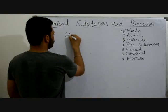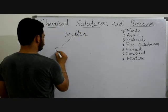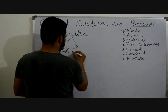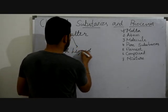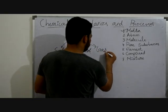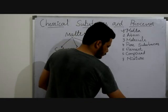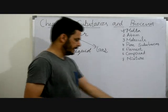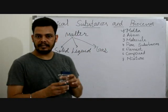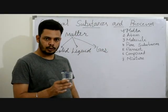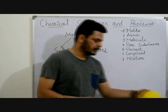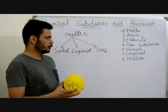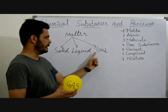Matter is divided into solid, liquid and gas. Let's take the example of solid — this marker is a solid structure. For liquid, we are familiar with water, and it is also matter. The third one is gas. If I have this balloon, it has air inside it, so air is in the form of gas. So matter exists in three forms: solid, liquid and gas.